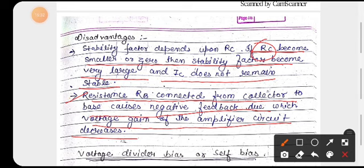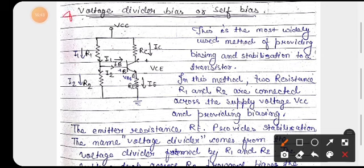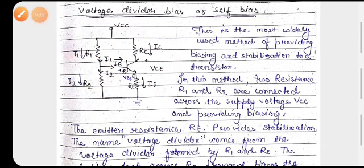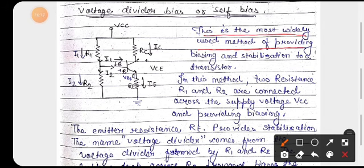A second disadvantage of the collector-to-base circuit is that resistor RB connected from collector to base causes negative feedback, due to which the voltage gain of the amplifier circuit decreases. This is the basic disadvantage of the collector-to-base bias circuit.